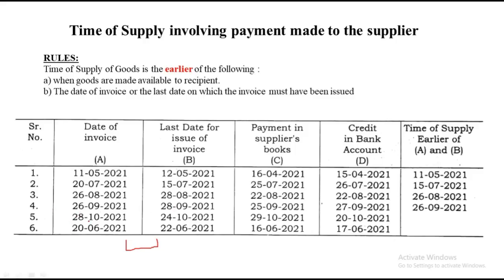Continuing the examples: 26th September and 28th September — 26th is the earlier date. Then 28th October and 24th October — 24th October is earlier, so 24th October is the time of supply. Last: 20th June and 22nd June — 20th is earlier, so the answer is 20th June. Remember: whenever there is payment in the supplier's book, it is always based on payment made to the supplier. The rule is: date of invoice or last date of invoice, whichever is earlier.